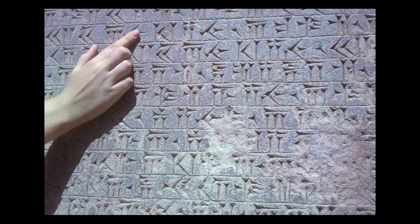"And a certain Babylonian named Nidintu-Bel, the son of Kinzir, raised a rebellion in Babylon; he lied to the people, saying: I am Nebuchadnezzar, the son of Nabonidus. Then did all the province of Babylonia go over to Nidintu-Bel, and Babylonia rose in rebellion. He seized on the kingdom of Babylonia — 3rd of October 522 BC."